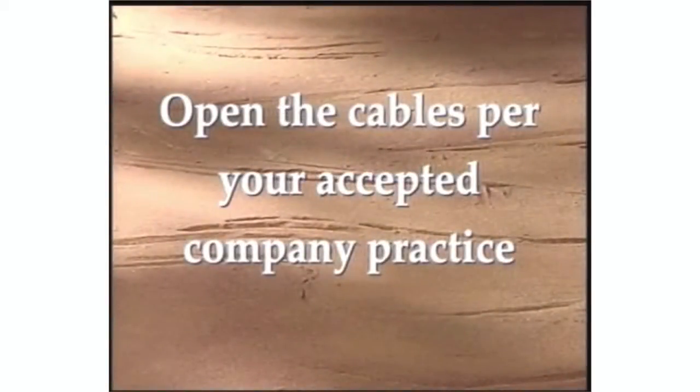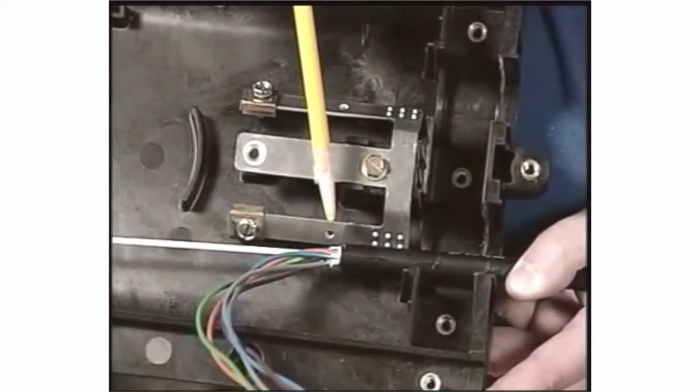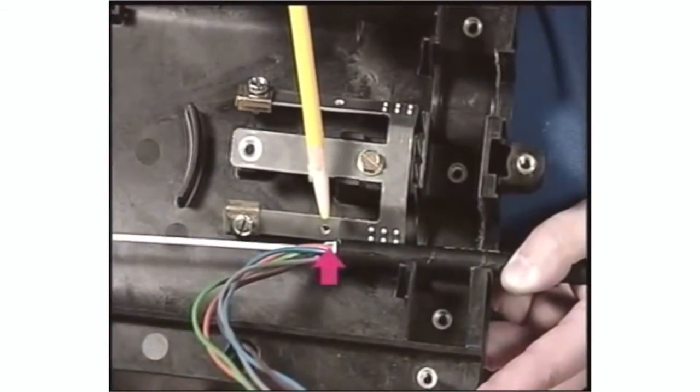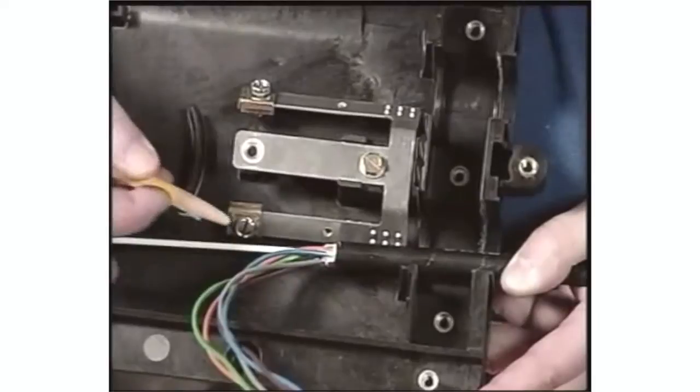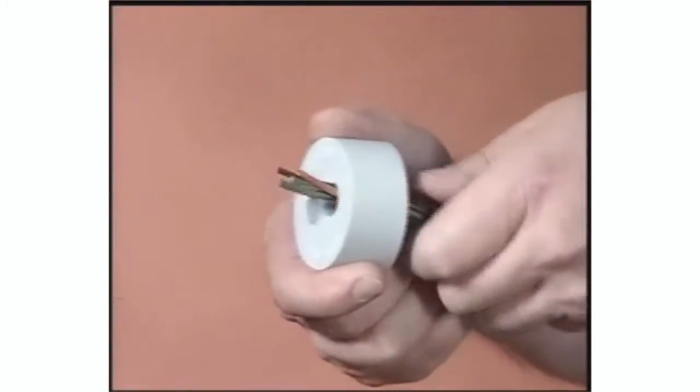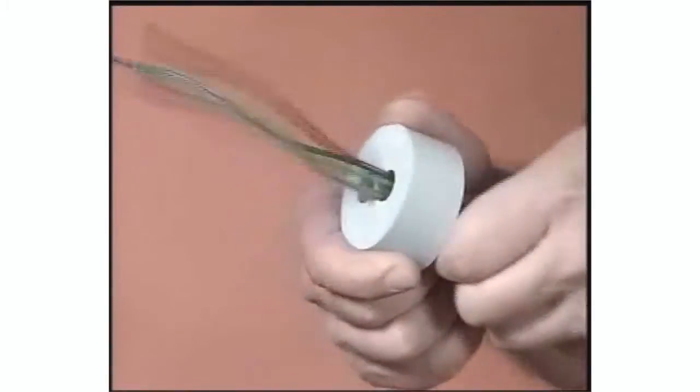Open the cables for your accepted company practice. With the cable opening aligned with the hole in the strength member bracket, make a mark where the strength member will be cut. Install the fibers through the grommet and slide the grommet onto the cable.